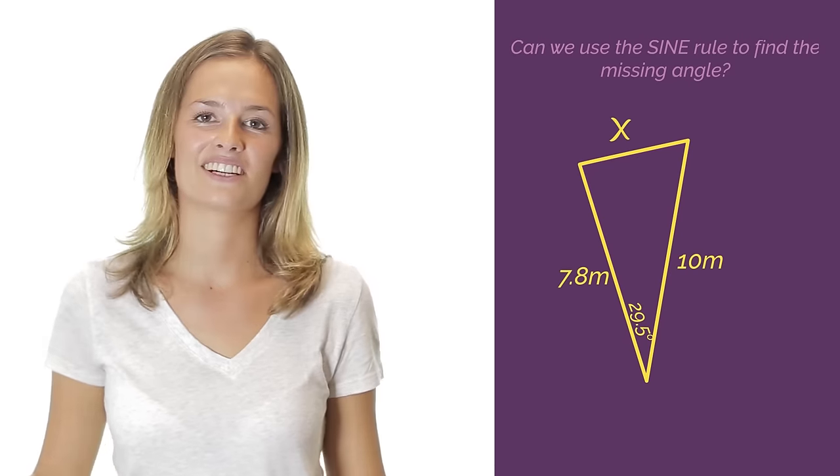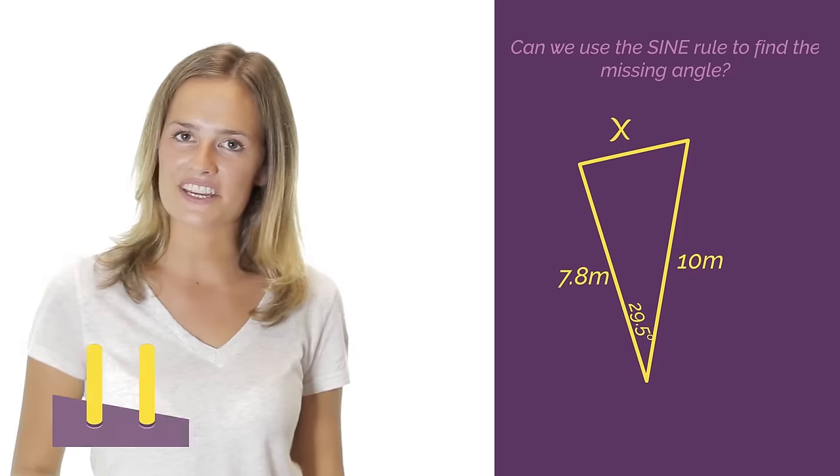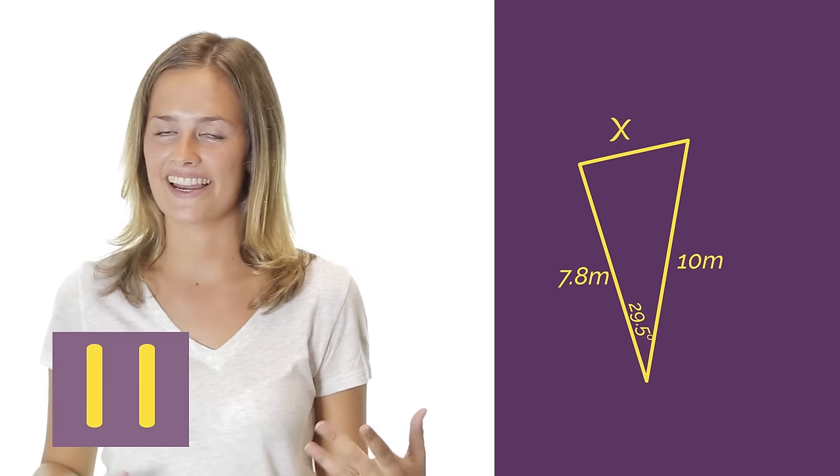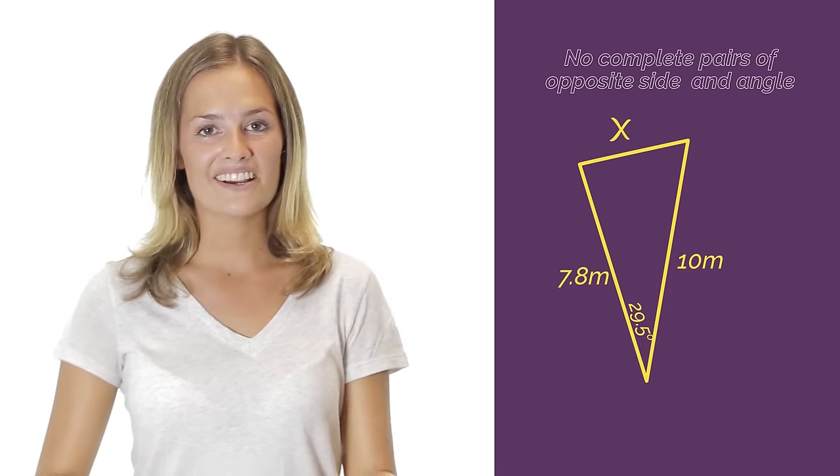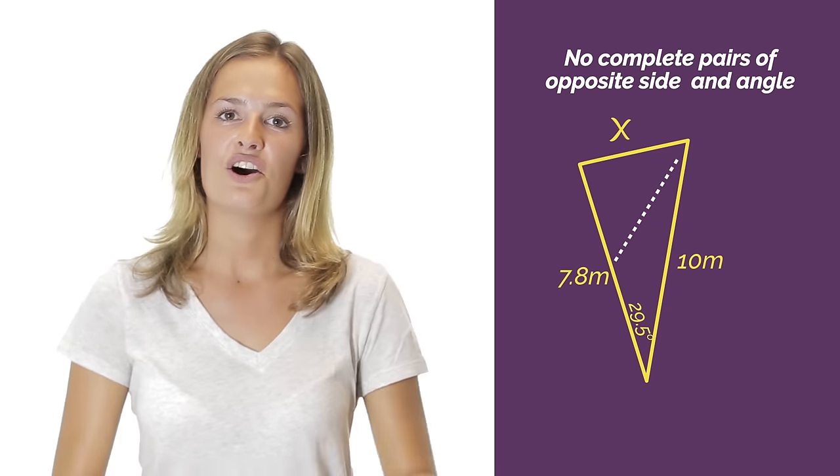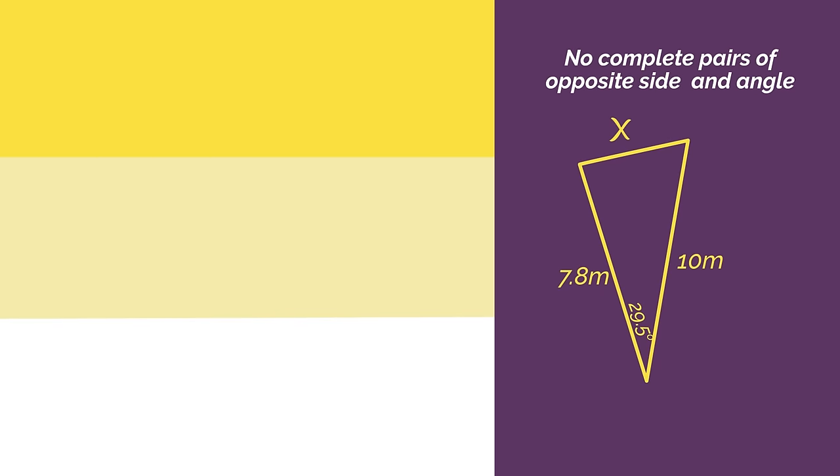What about this triangle? Can we use the sine rule to find the missing side? Pause the video, work out the answer and click play when you're ready to check. No we can't! We don't have any complete pairs of opposite side and angle and the half pair. So this means we use the cosine rule.